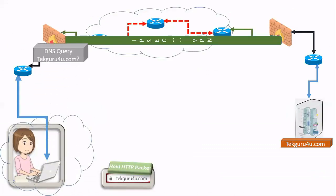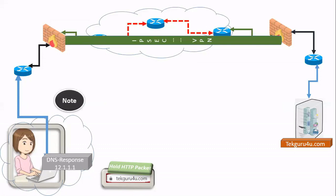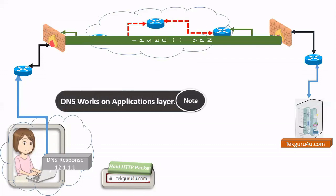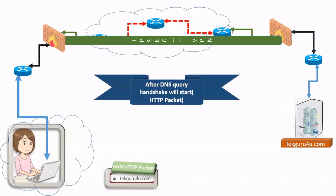You'll see that a DNS query is sent asking what is techguru4u.com, and it gets a reply with the IP address for techguru4u.com — that's an example IP address, not the actual one. That's the DNS response you got. DNS works on the application layer and it's a separate protocol. After the DNS query, the handshake will start.